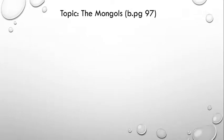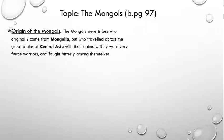Moving to our today's topic, the Mongols, on book page number 97. First we will know from where the Mongols came, or what was their origin. The Mongols were tribes who originally came from Mongolia but who traveled across the great plains of Central Asia with their animals. They were very fierce warriors and fought bitterly among themselves. The word 'tribe' means a group of people who are related together on the basis of the same society, ethnicity, religion, or political basis. So people who belonged to Mongolia were sharing the same traits or characteristics, and that's why they were called Mongols.